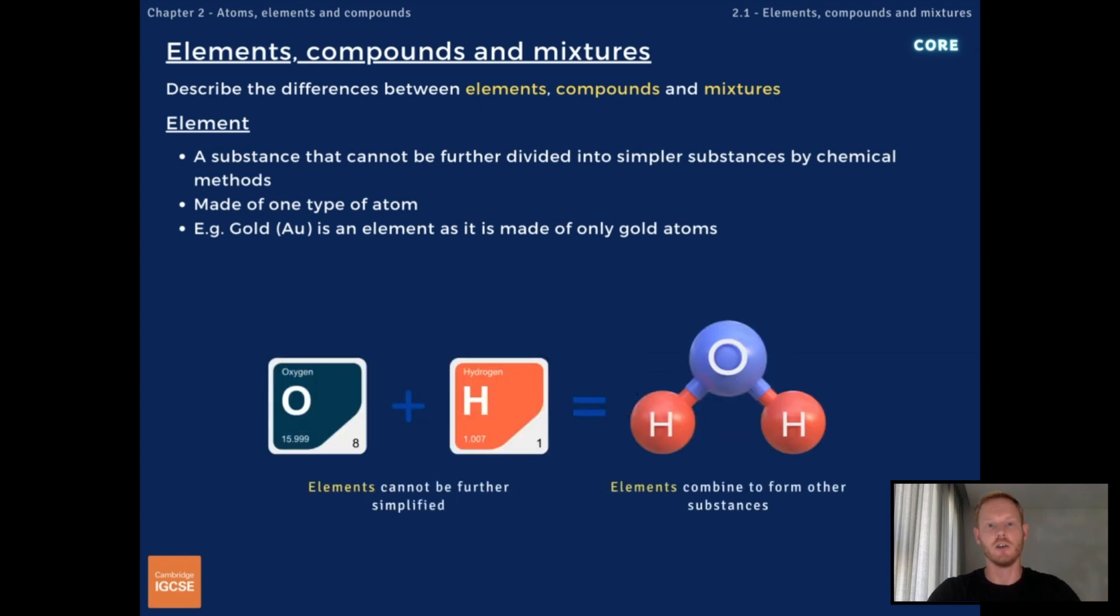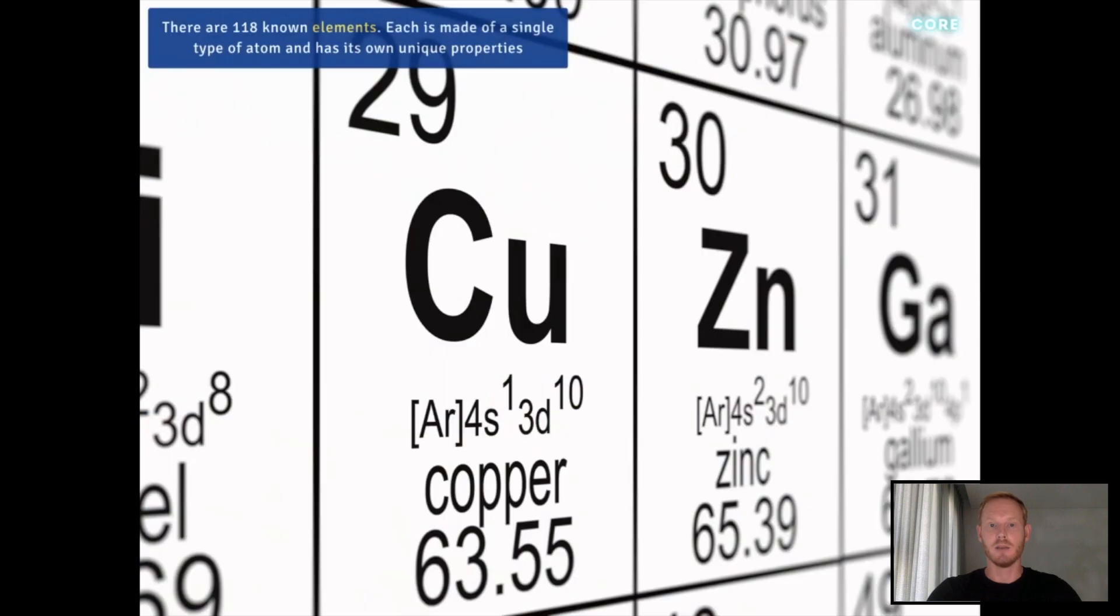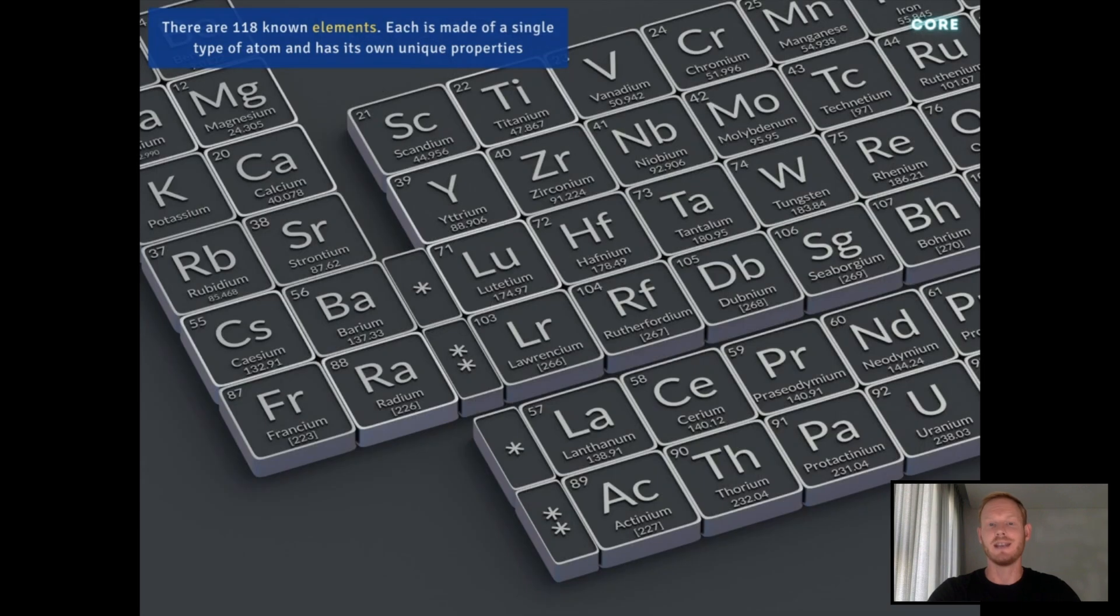For example, oxygen and hydrogen are both elements that chemically combine to form water. The water can be broken down by chemical methods into hydrogen and oxygen, but hydrogen and oxygen cannot be further decomposed. Elements are arranged in rows and columns in the periodic table and are represented by chemical symbols like Cu for copper and N for nitrogen. There are 118 known elements, each of which has its own unique properties.